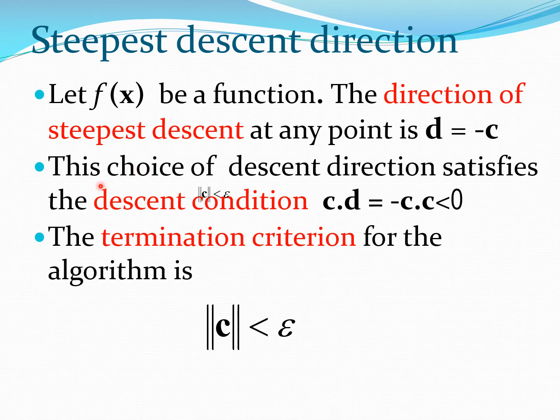Now we should immediately put this search direction to the test of whether it satisfies the descent condition. Here we see that the descent condition is c dot d less than 0. If we do c dot d, it becomes negative c dot c, and so this is always going to be less than 0 because this is essentially the norm of the vector c.